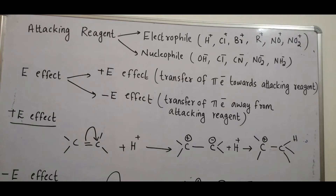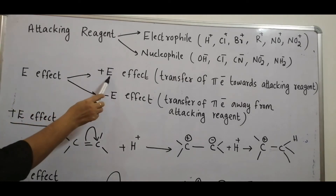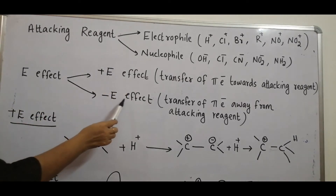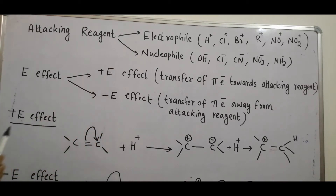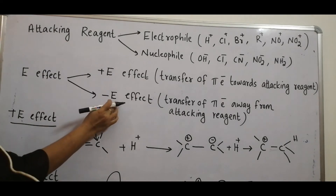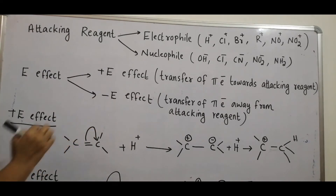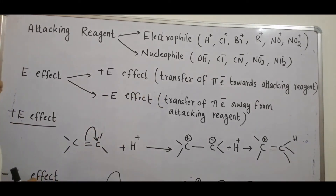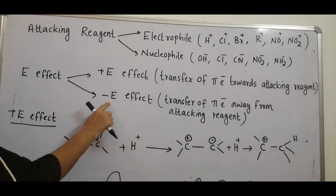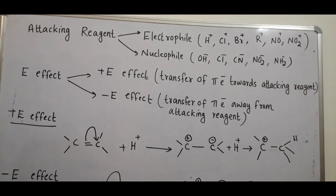There can be a positive E effect or a negative E effect. In the positive electromeric effect, there is a transfer of pi electrons towards the attacking reagent. In the negative electromeric effect, there is a transfer of pi electrons away from the attacking reagent.